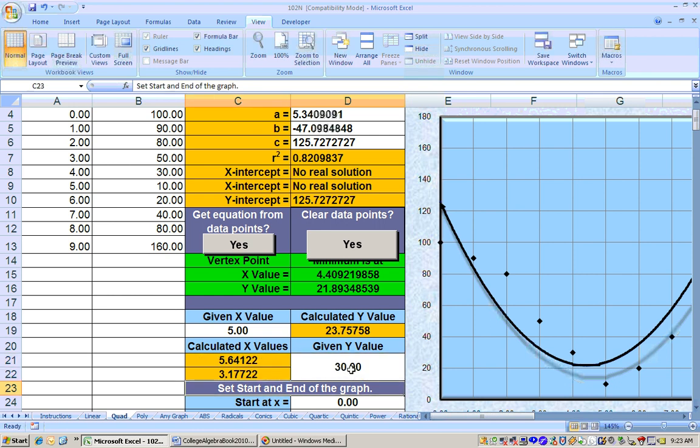When will there be 30? Well, just put in 30 for Y, and you get two answers for that, day 5.64 and day 3.1.